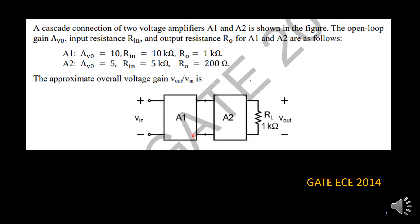For this amplifier, the gain, input impedance, and output impedance are given. Similarly for A2, its gain, input impedance, and output impedance are provided. We need to find out the overall voltage gain — that is, Vout upon Vin.